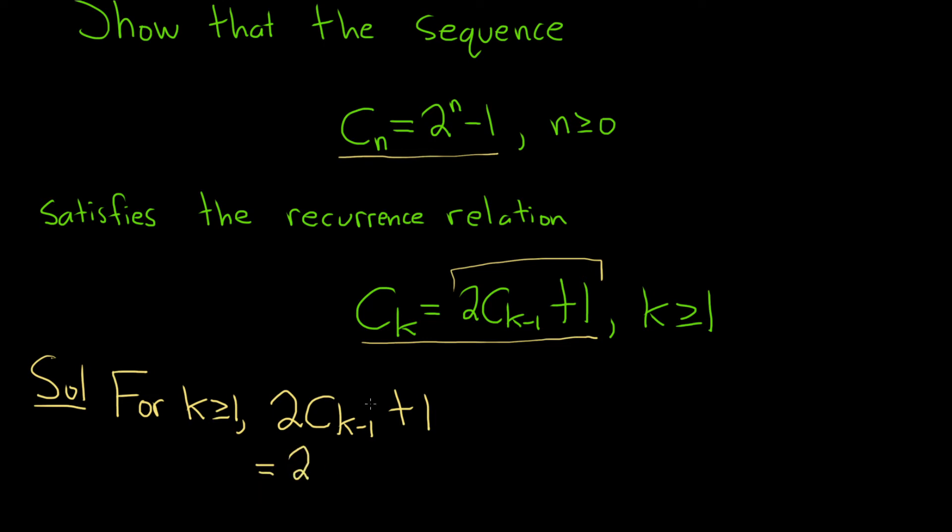So this is 2. So c sub n is 2 to the n minus 1. So here it'll be 2 to the k minus 1 minus 1, just replacing all of the n's here with k minus 1. And then we still have the plus 1.